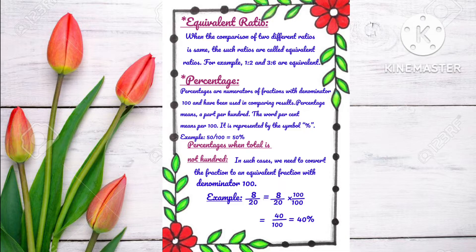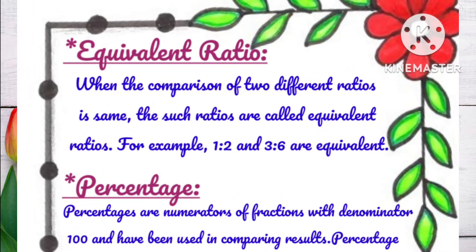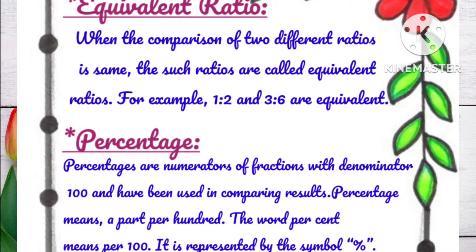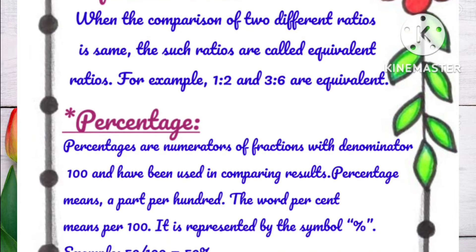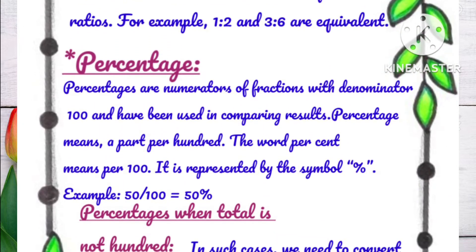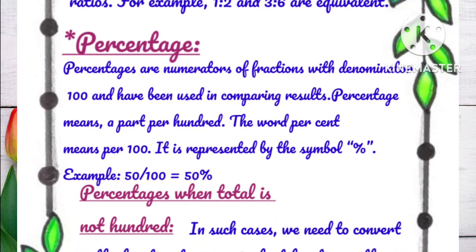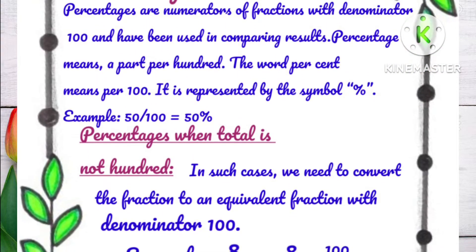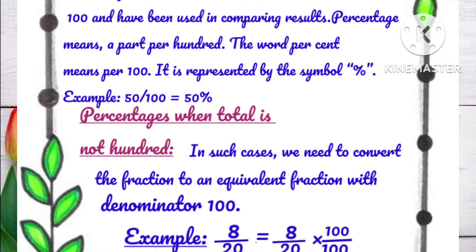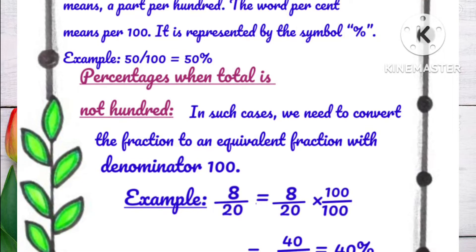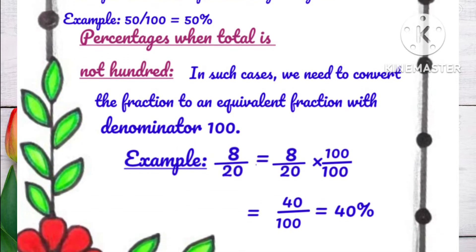The next page is equivalent ratio and its information. After it is percentage, its information, and its examples. Following that is percentage when total is not 100, with its information and an example.